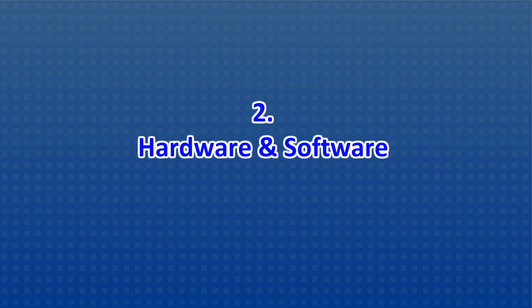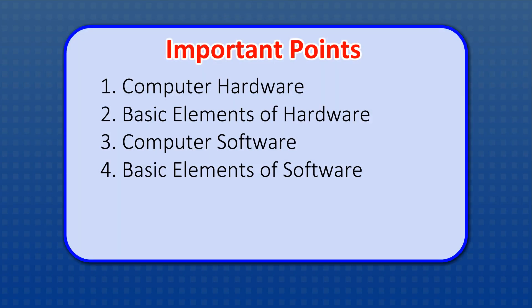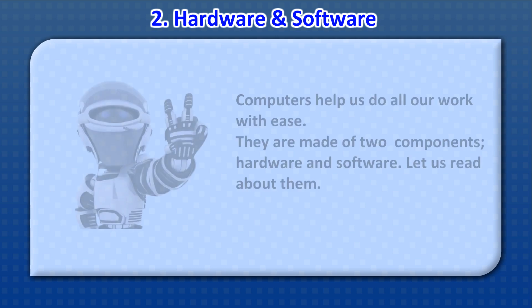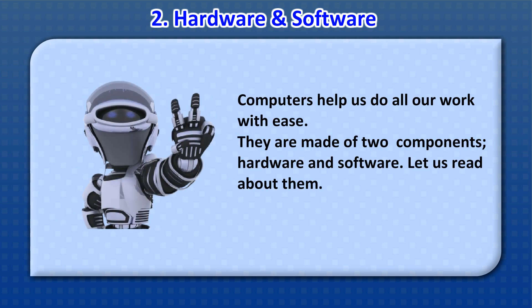Chapter 2: Hardware and Software. Important points: 1. Computer Hardware, 2. Basic Elements of Hardware, 3. Computer Software, 4. Basic Elements of Software. Computers help us do all our work with ease. They are made of two components: hardware and software.